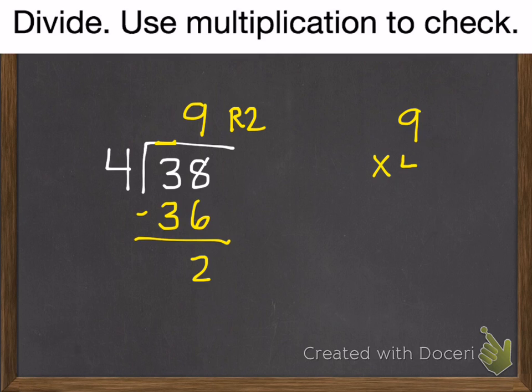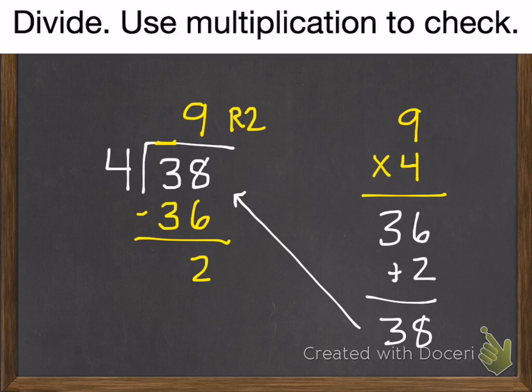Check with multiplication. 9 times 4 is 36. Add in our remainder of 2. And we get 38. So 9, remainder 2 is correct.